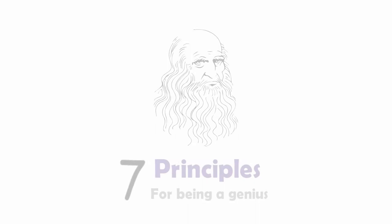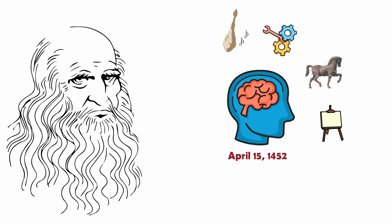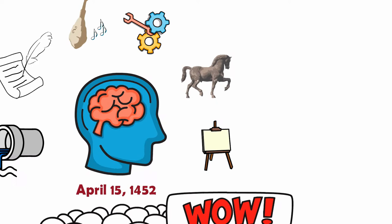Leonardo da Vinci was an Italian polymath who was born on April 15, 1452. He is recognized for his work as a painter, sculptor, engineer, inventor, musician, writer, and architect, for which he has been considered a great genius. His most known pictorial works are La Gioconda, also known as Mona Lisa, and The Last Supper.